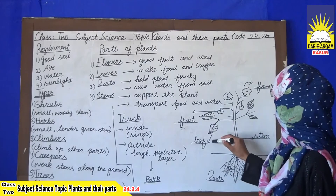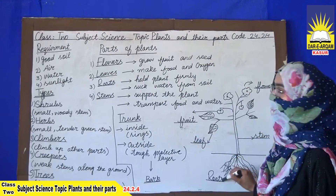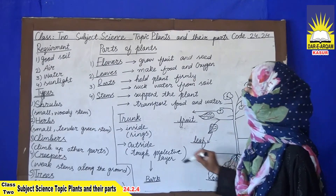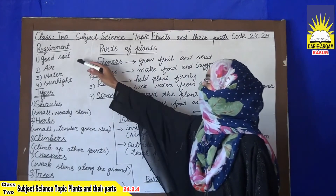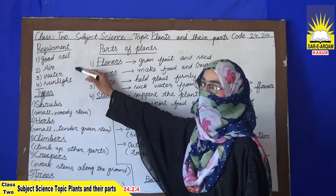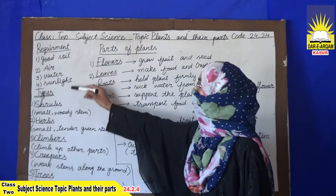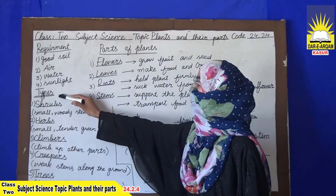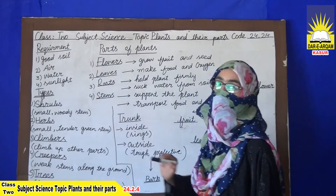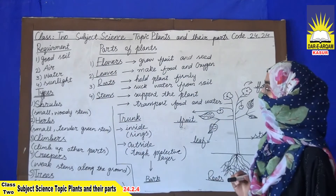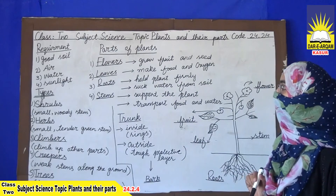A good plant has fruits, flowers, leaves, stems, and roots. All of these are possible due to these four requirements. Now we discuss the types of plants.